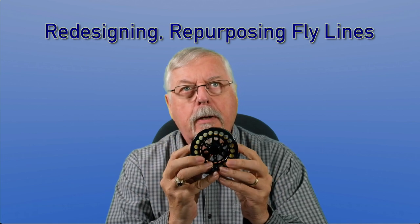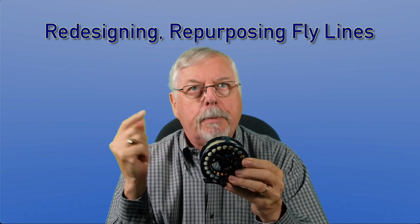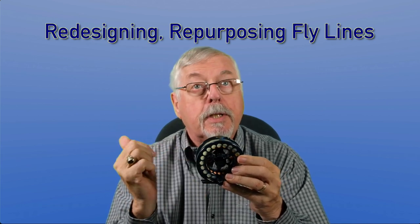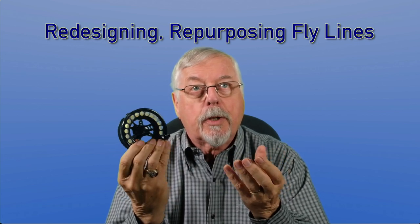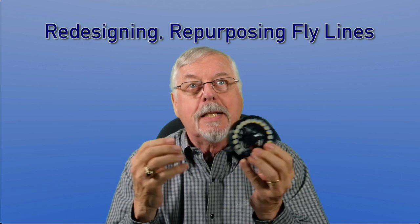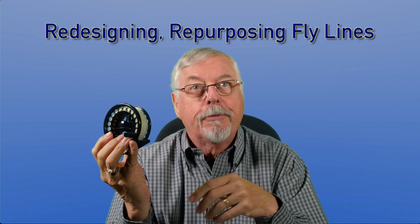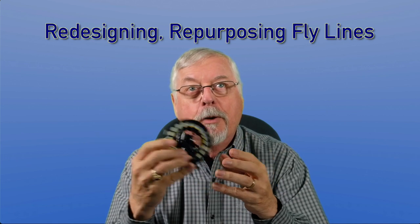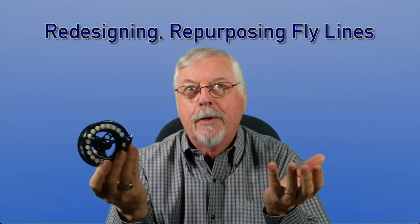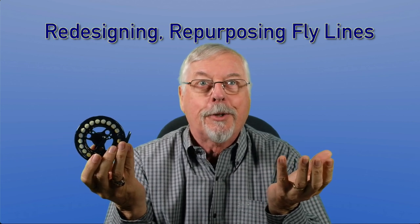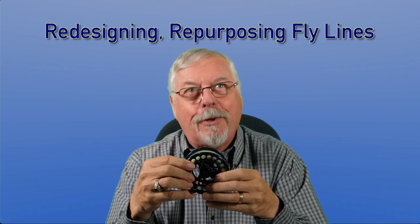I want to put a floating running line on it. Plus, because of the way the taper was made, I wanted to reverse it. I wanted the rear taper to be the front and the front taper to be the rear, because the rear taper was very long. That looks like a spey line. I set this up to work on a four-weight rod as a four-weight spey line. So I cut the head off the Velocity clear intermediate, flipped it around, welded on a floating running line, and there I got a line that doesn't exist in the world — my Velocity four-weight clear intermediate with a floating running line.